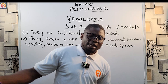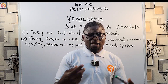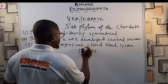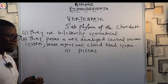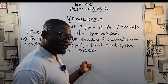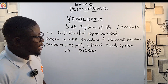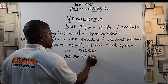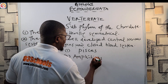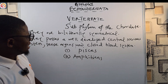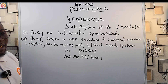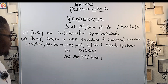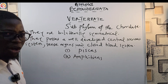The vertebrates are divided into five classes. Number one is Pisces — the fishes. Number two is Amphibia — the amphibians, animals that live on both land and water; they are both terrestrial and aquatic.